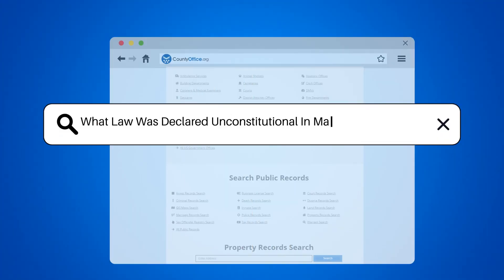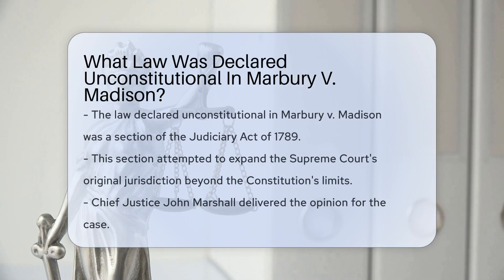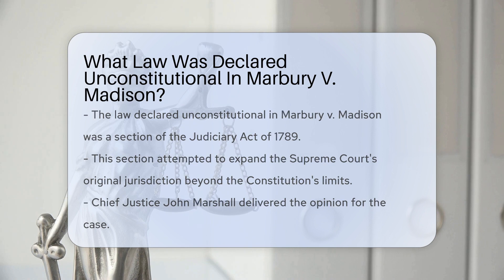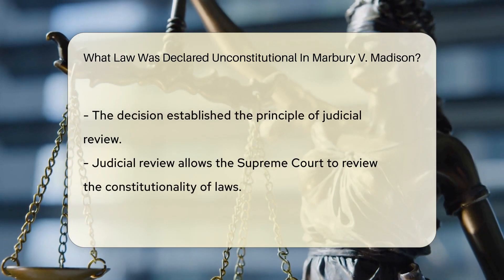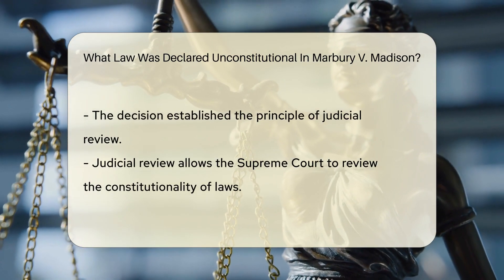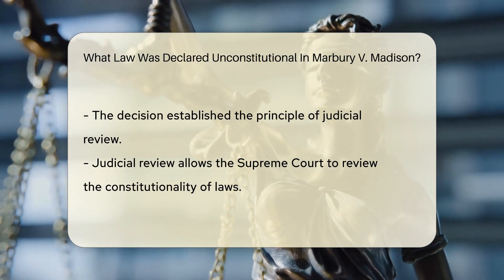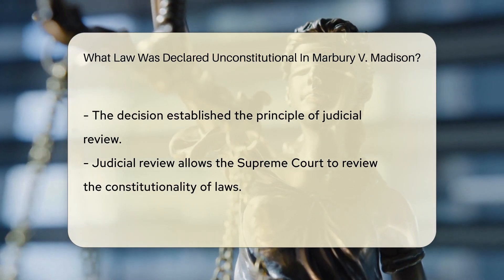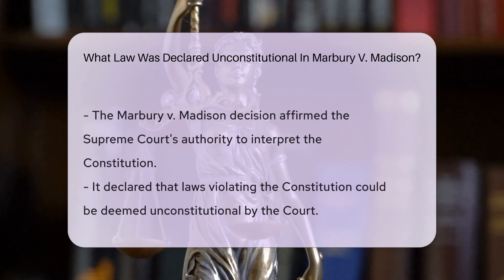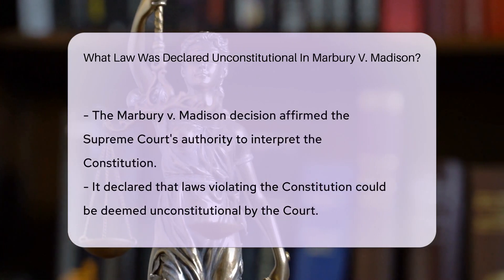What law was declared unconstitutional in Marbury v. Madison? In the landmark case Marbury v. Madison, the law declared unconstitutional was a section of the Judiciary Act of 1789. This law attempted to expand the Supreme Court's original jurisdiction beyond what the Constitution allowed. Chief Justice John Marshall's opinion established the principle of judicial review, empowering the court to review laws' constitutionality.